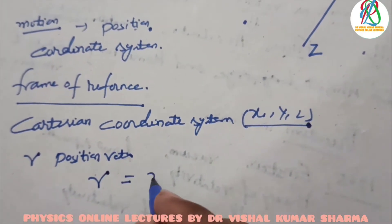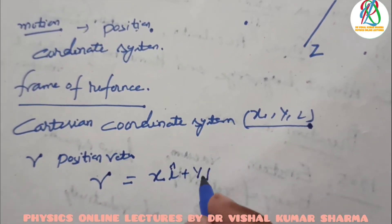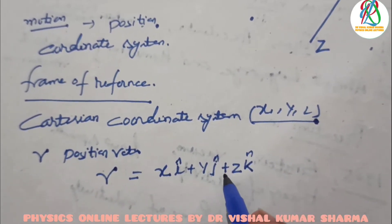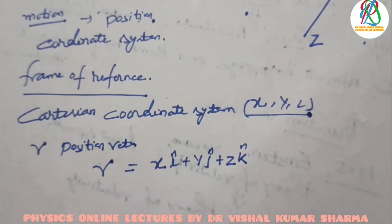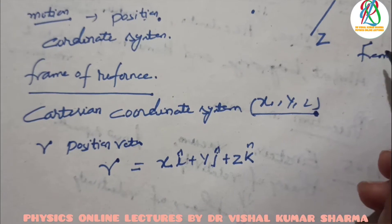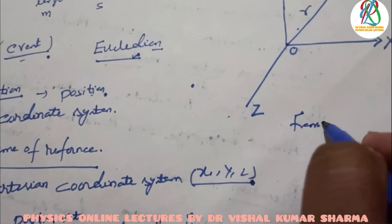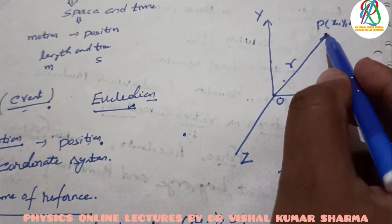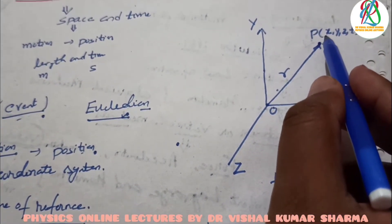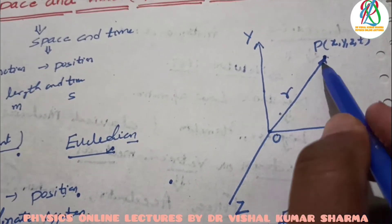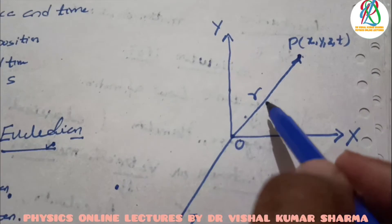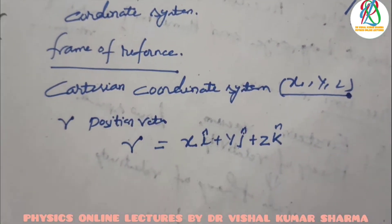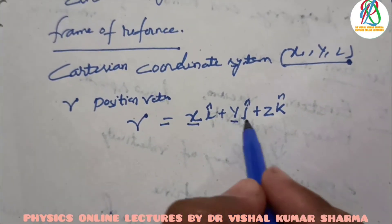The position vector r is expressed in three Cartesian coordinates as: r = x·i-cap + y·j-cap + z·k-cap, where i, j, k are the unit vectors along the x, y, and z axes respectively. This is the frame of reference in which we describe a particle's position, and the position vector gives information about the path the particle has followed, expressed in terms of x, y, z, and unit vectors i, j, k.